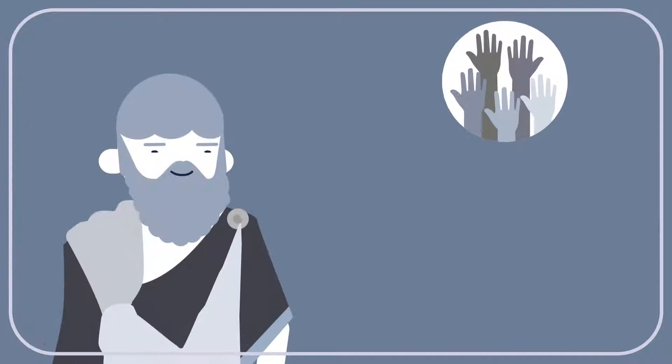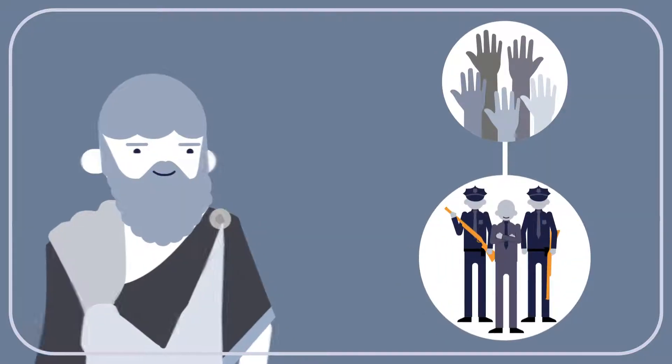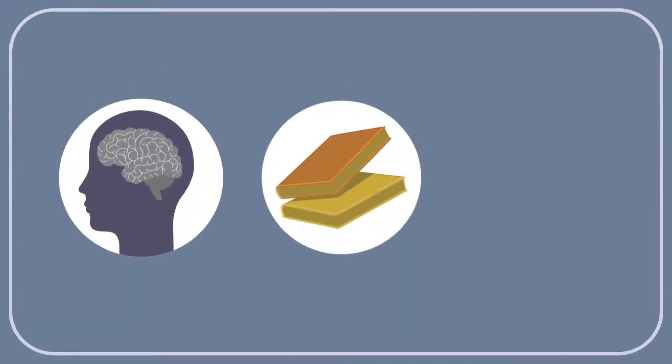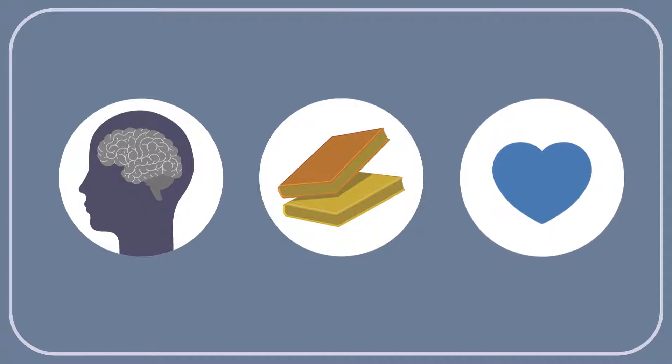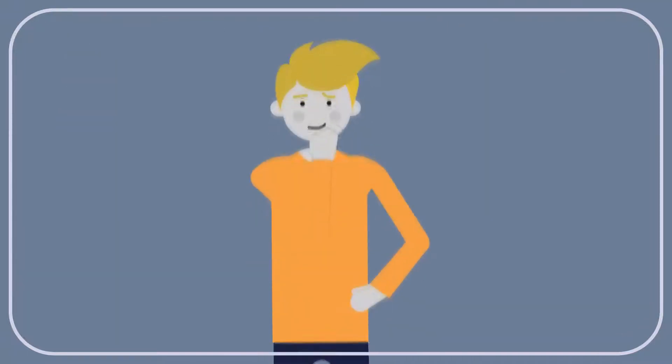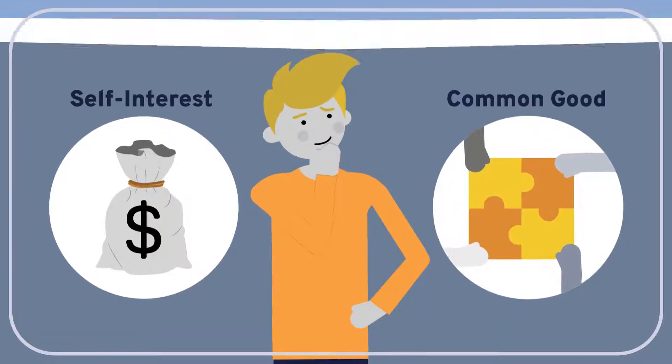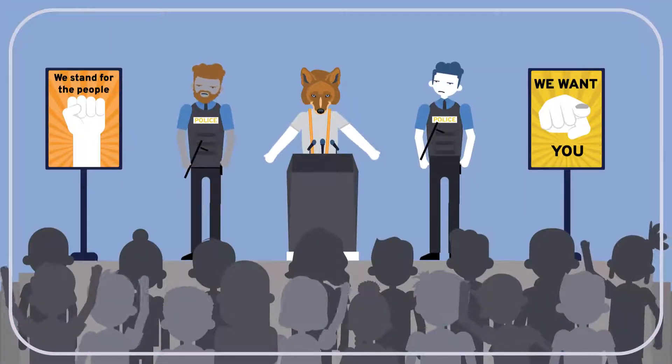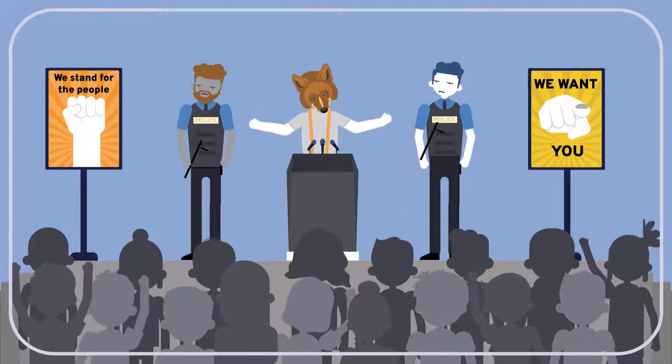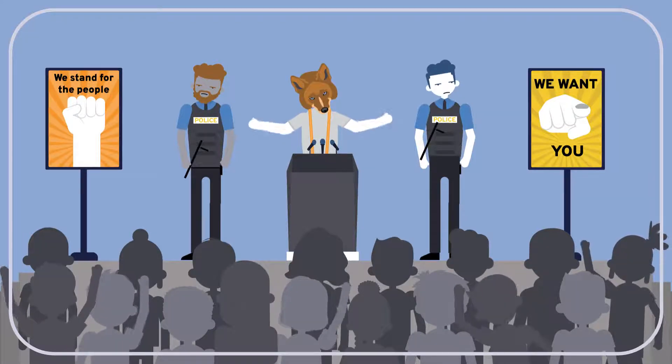Plato argued that democracy led to tyranny. That's because most people don't have the intelligence, education, or interest to know what's best for society as a whole. Plus, people are generally motivated by their own interests more than the common good. This makes it easy for a demagogue to hijack an election by manipulating people's ignorance and self-interest for his own nefarious ends.